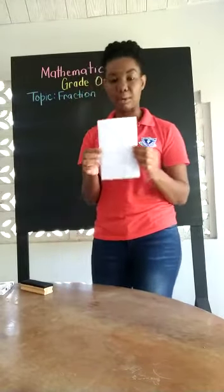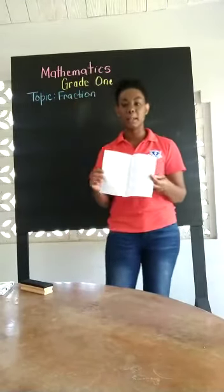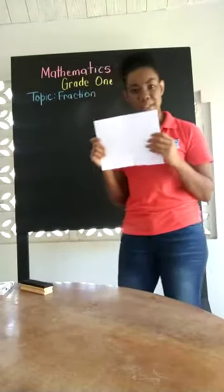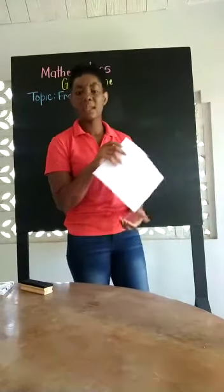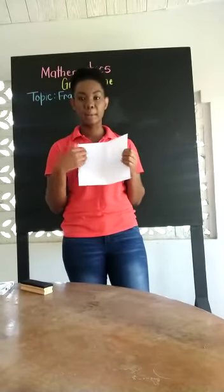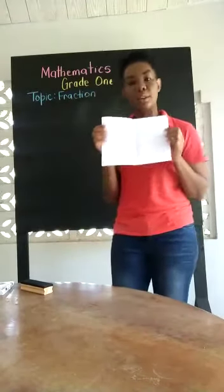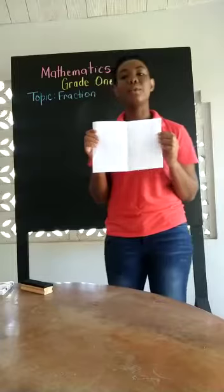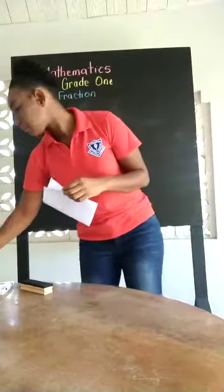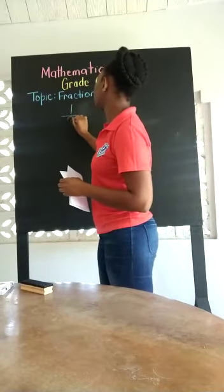Now that you have folded your paper into a half, I want you to open it. Open the paper and tell me how many parts are you seeing. We are seeing two equal parts. Let us call them one, two. We are seeing two equal parts. Now that we are seeing two equal parts, the fraction that we use to represent a half is one over two.